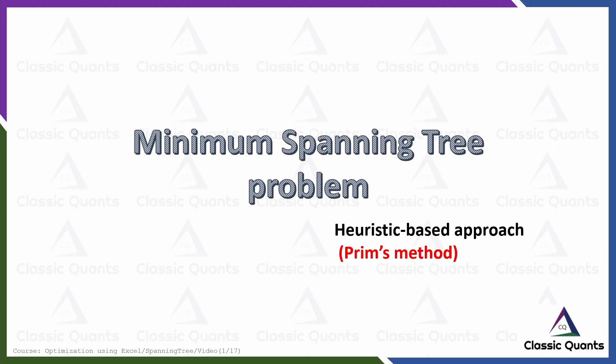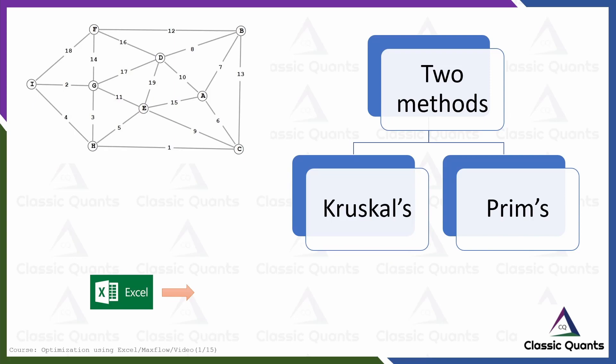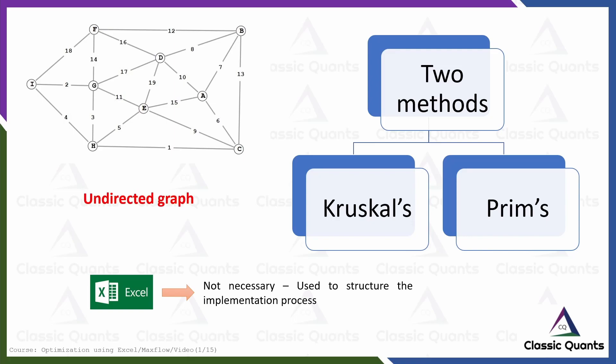In the last video, video number 16, we discussed the same problem — minimum spanning tree — but using Kruskal's method. In this video it will be continued further and Prim's algorithm will be used to solve the same problem. There are two methods: one is Kruskal's and the other is Prim's.